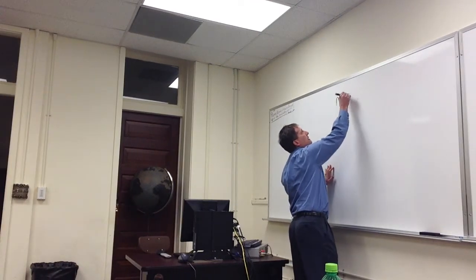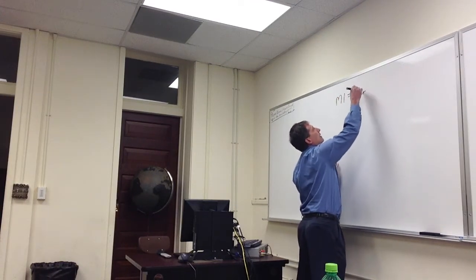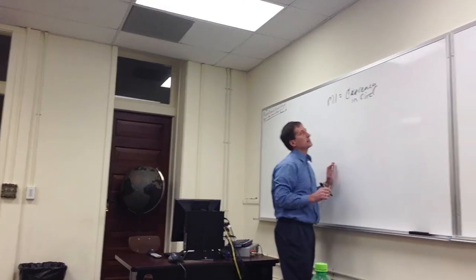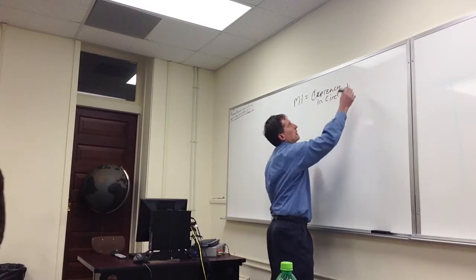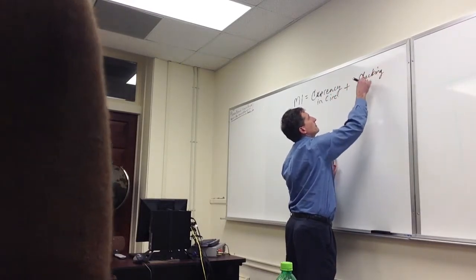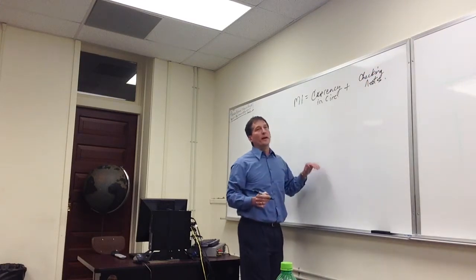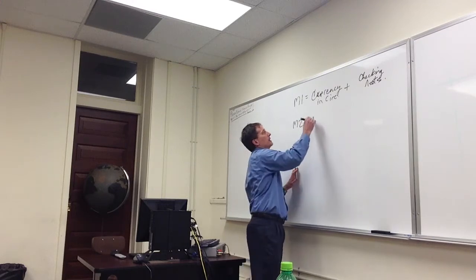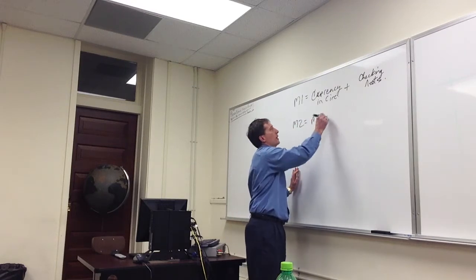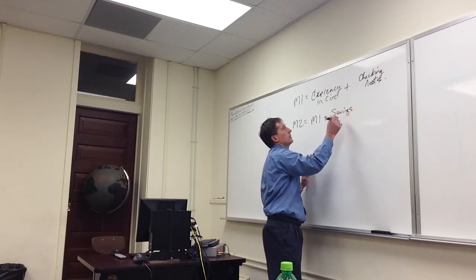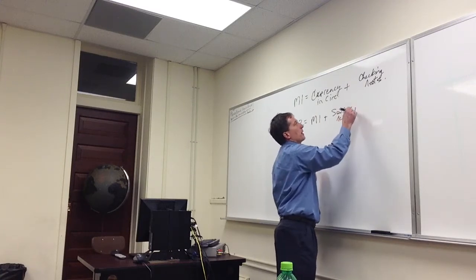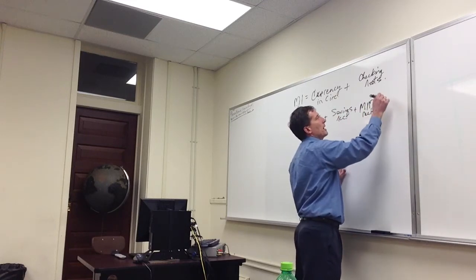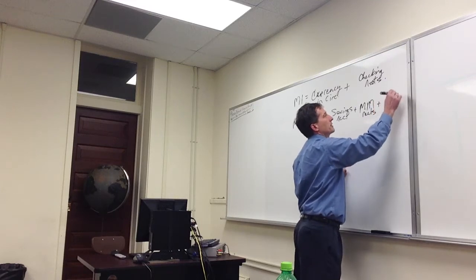Currency in circulation outside of banks — that's how we define it — plus checking accounts, that's M1. M2 is M1 plus some more accounts: savings accounts, money market accounts, and some time deposits, some CDs, certificates of deposit.